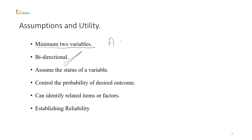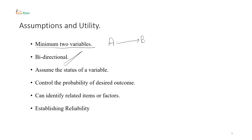जब हम लोग किसी correlation के बारे में चर्चा करते हैं तो इसकी दूसरी assumption है bidirectional। जब हम लोग किसी सह संबंध के बारे में चर्चा करते हैं तो एक व्यक्ति का दूसरे व्यक्ति के साथ जैसा संबंध है वैसा ही संबंध उस दूसरे व्यक्ति का उस पहले व्यक्ति के साथ होगा। यदि हमारे पास variable A और variable B हों तो जो correlation A का B के साथ होगा, वही correlation B का A के साथ होगा। इसे हम bidirectional arrow के माध्यम से दर्शाते हैं।